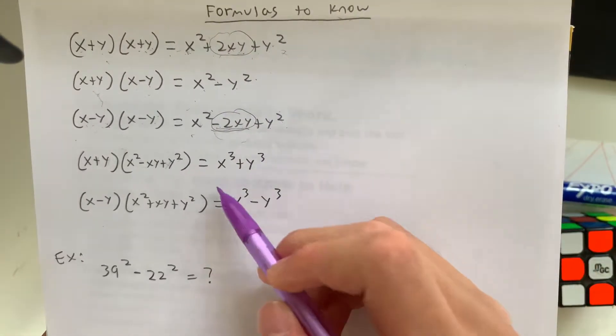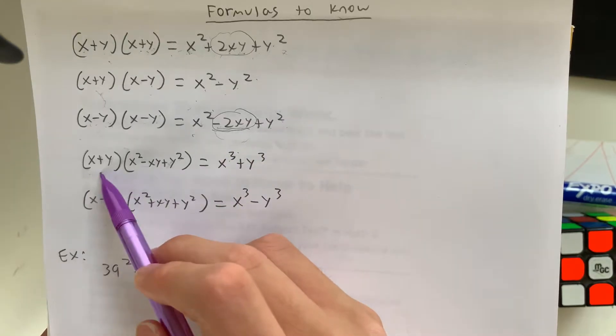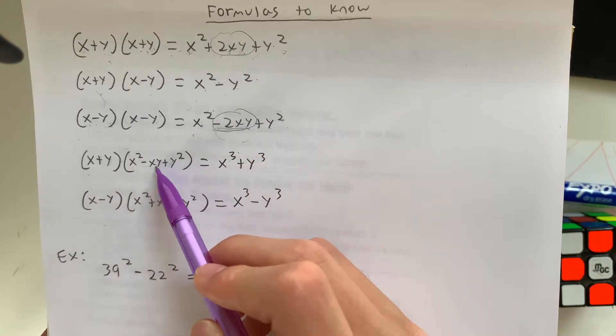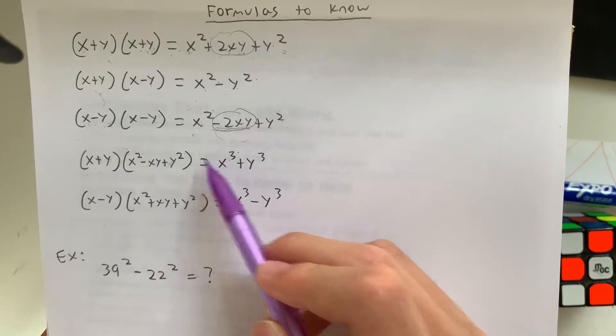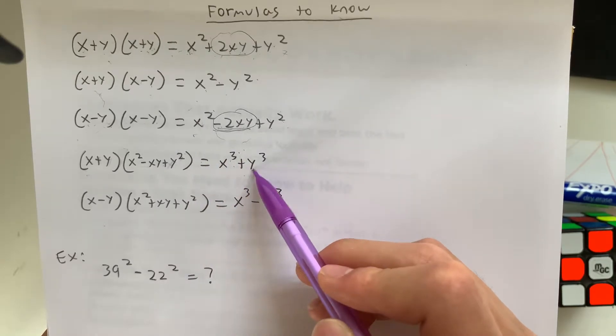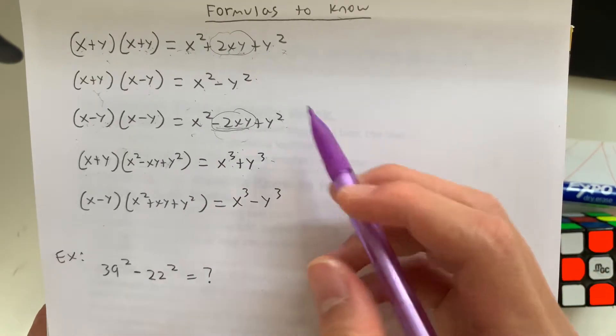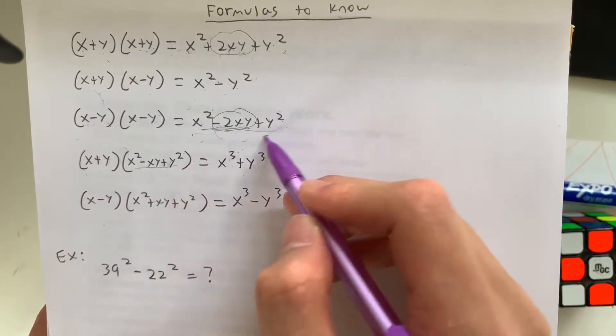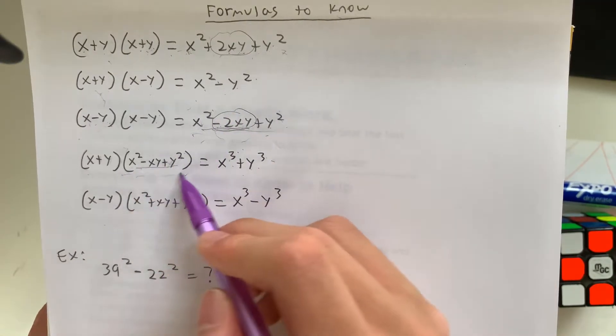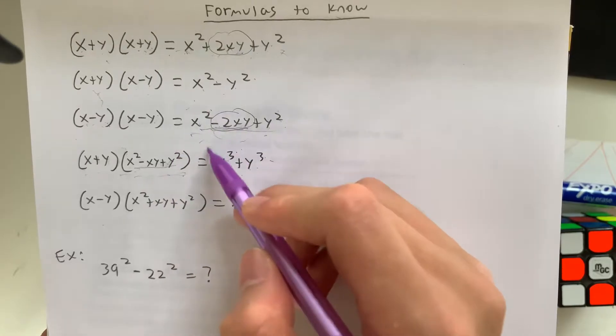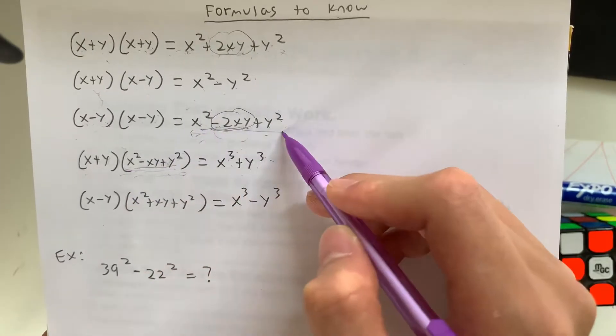Next we have the cubes. So x plus y times x squared minus xy plus y squared equals x to the third plus y to the third. Don't confuse this with this because these two are not the same thing. Don't think you could distribute this even further.